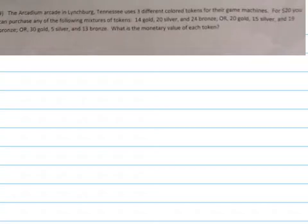Anytime you're doing a systems of equations problem, what you always want to do first is define your variables. I do that by looking at the question and finding out what they're looking for. It says, what is the monetary value of each token? So I've got three types of tokens.